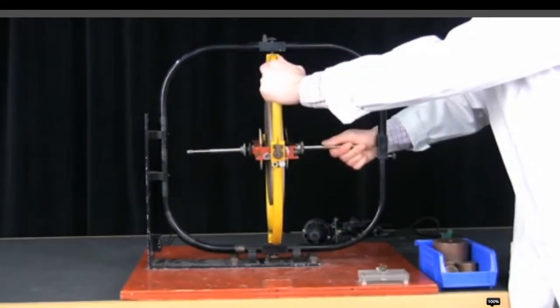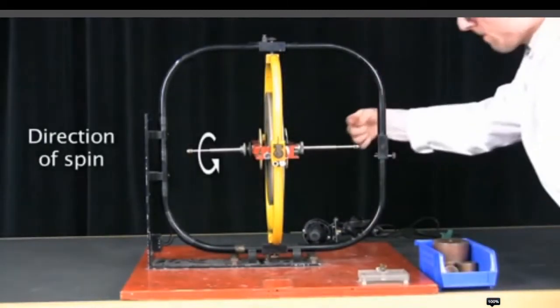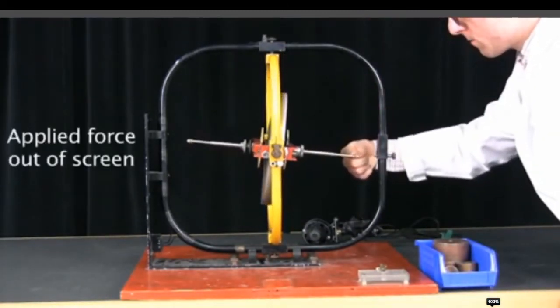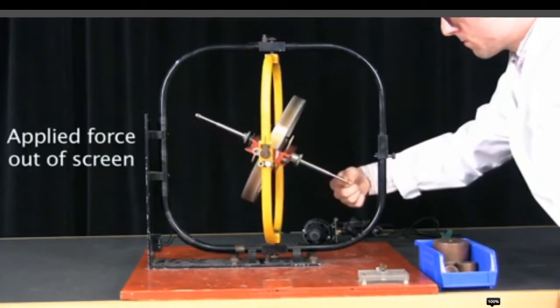Again, direction of spin is same. And the person is applying force pointing out the screen. And the spin axis moves downwards.